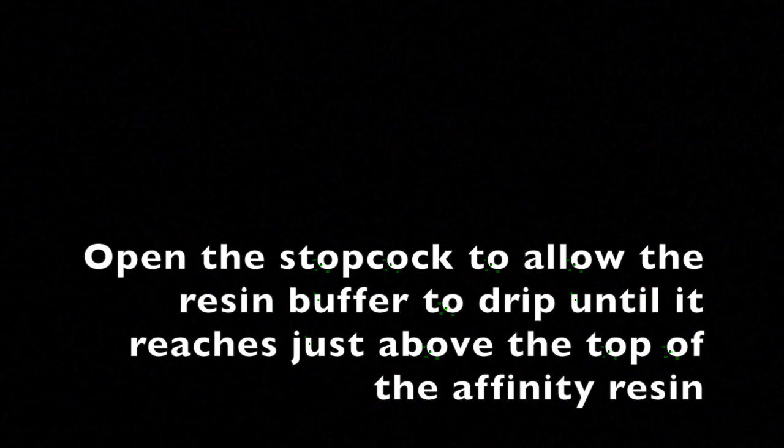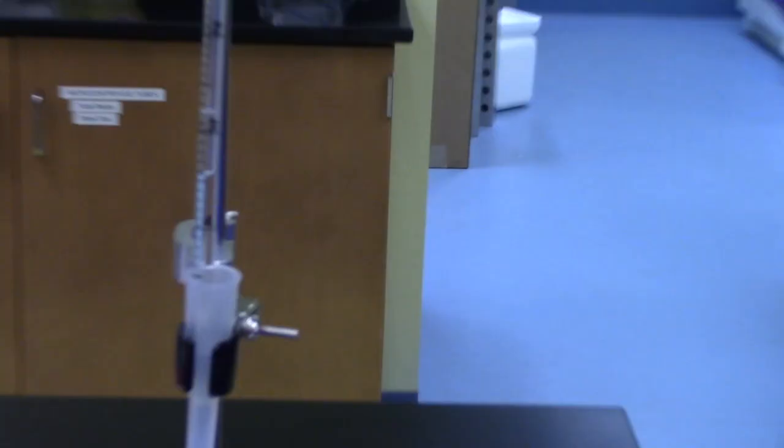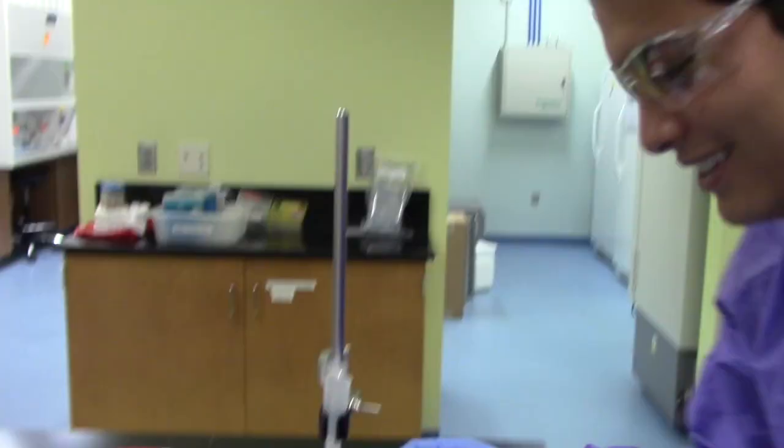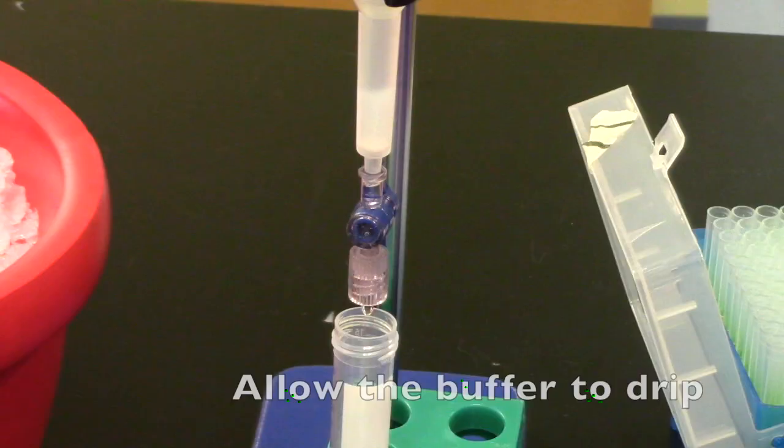Open the stopcock to allow the resin buffer to drip until it reaches just above the top of the affinity resin. Add the bind wash buffer. Allow the buffer to drip until it reaches the top of the resin bed.